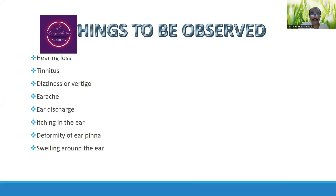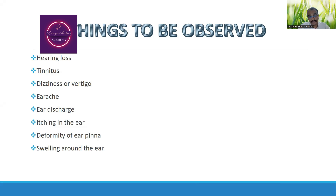Dizziness or vertigo may be seen in persons who have semicircular canal disturbances. Ear ache is specifically seen in cases of inflammations. Ear discharge is seen in cases of excessive wax accumulation or infections of the ear. Itching in the ear may indicate infections. Deformities are seen in cases of congenital disorders.